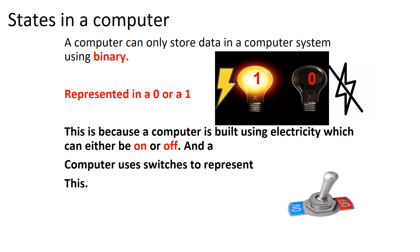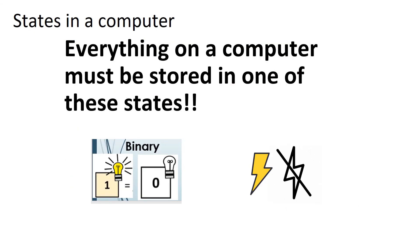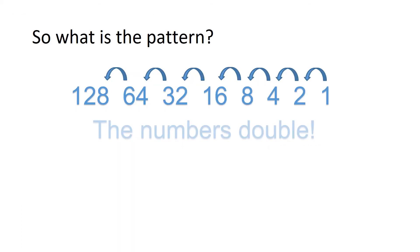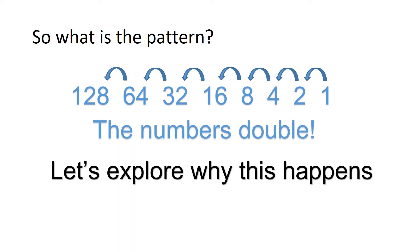Computers use hundreds of switches which can be in these two states. Everything from images to sound needs to be stored in one of these two states. That means a computer can't actually count like we do. So a computer counts using a binary pattern. Let's explore this pattern.